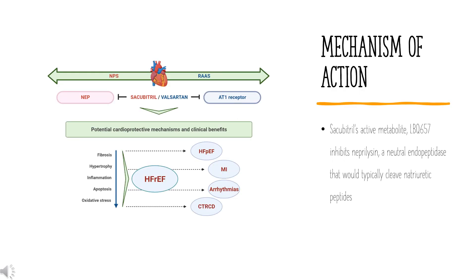Mechanism of Action: Secubitril's active metabolite LBQ-657 inhibits neprilysin, a neutral endopeptidase that would typically cleave natriuretic peptides, which includes atrial natriuretic peptide (ANP), brain natriuretic peptide (BNP), and C-type natriuretic peptide (CNP). ANP and BNP are released under atrial and ventricular stress, which activate downstream receptors leading to vasodilation, natriuresis, and diuresis.